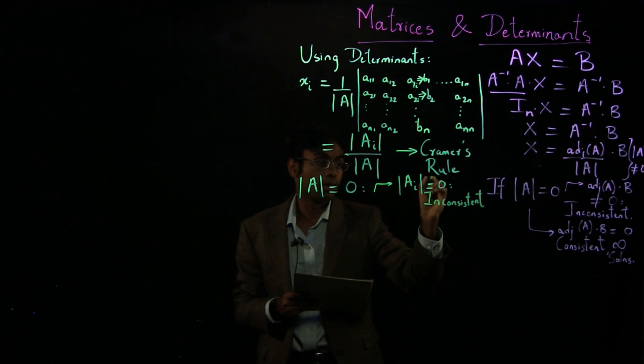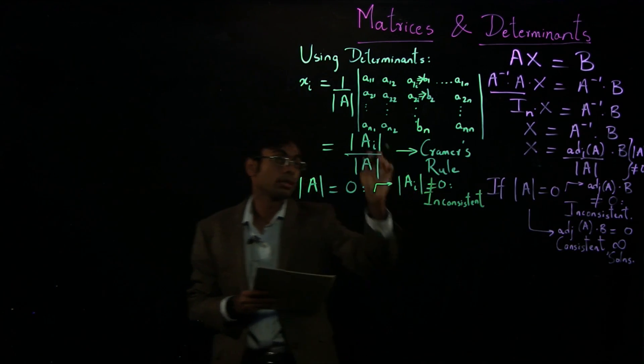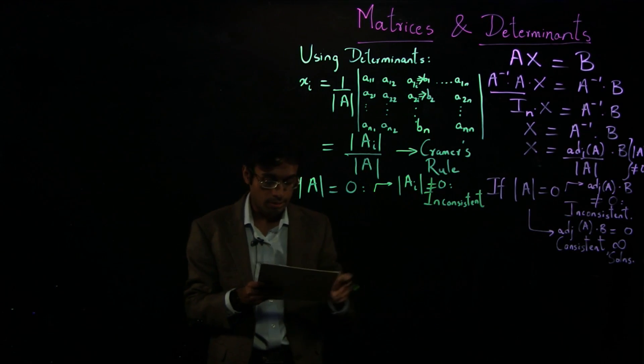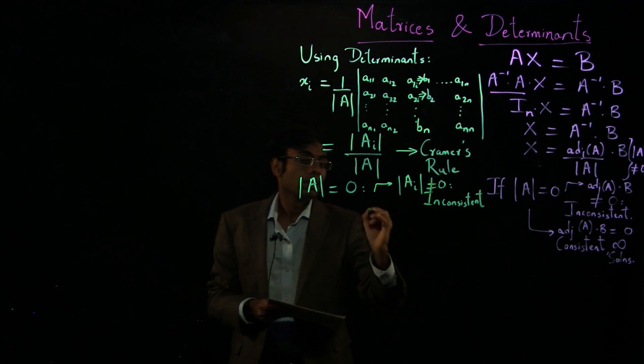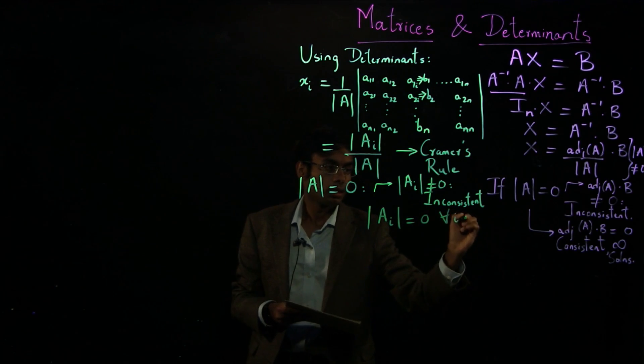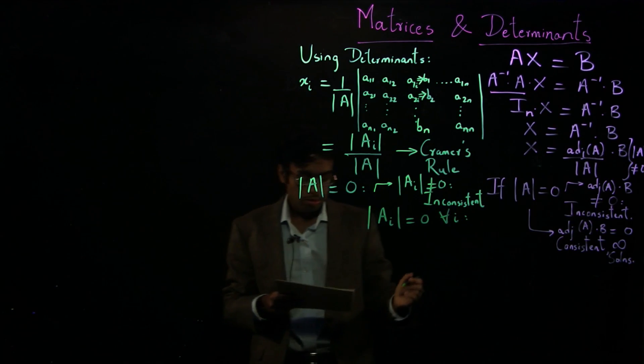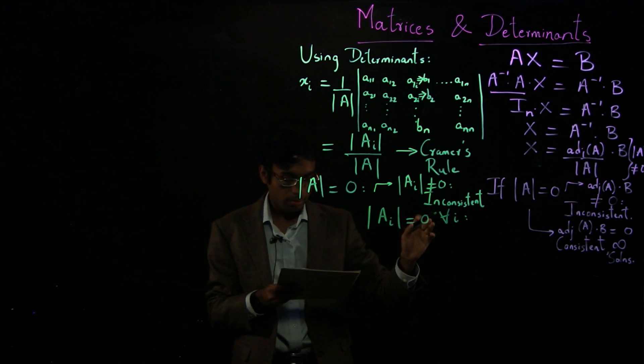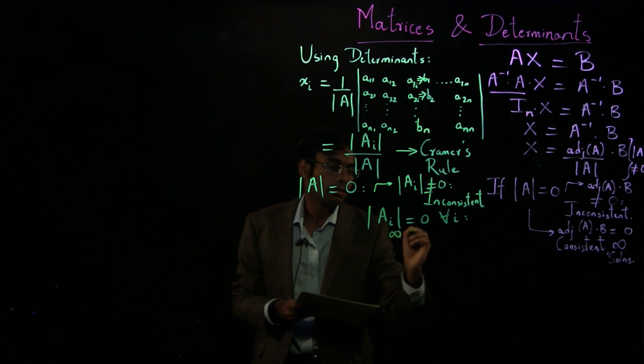I'm sorry, if any of the determinants in the numerator is non-zero, it is inconsistent. If all ai's are zero for all i, the system is consistent and it has infinite solutions.